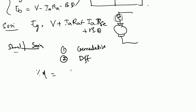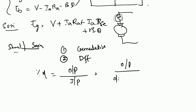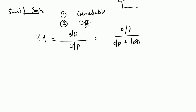Efficiency is output power divided by input power. For a generator, efficiency equals output power divided by output power plus losses. For a motor, efficiency equals output power divided by input power.